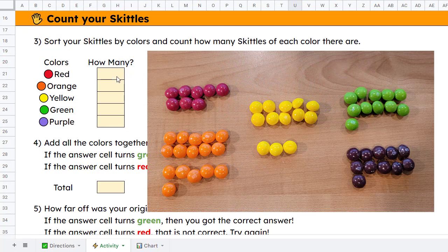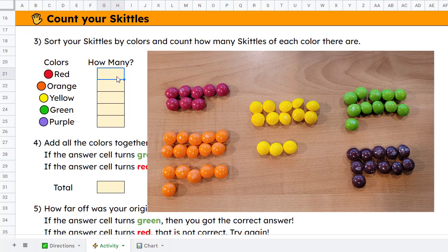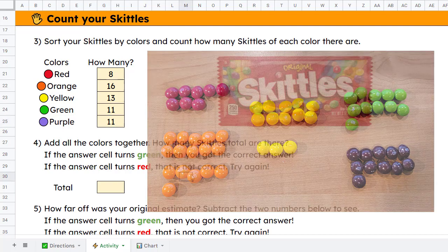All right, I'm back. I just finished sorting my Skittles here. And in my particular bag, first with the reds, I had eight of those. My oranges were actually 16. Quite a difference there. For yellow, I had 13. For green, I had 11. And for purple, I also had 11. So the same amount for those.